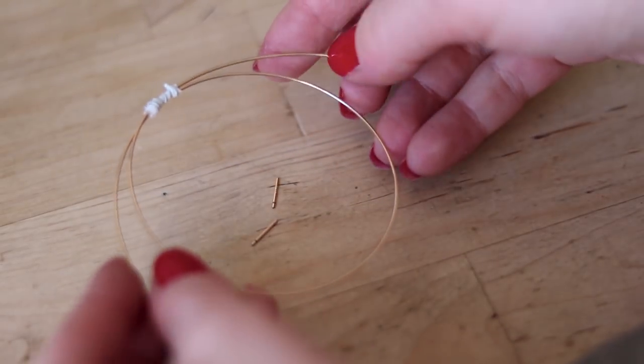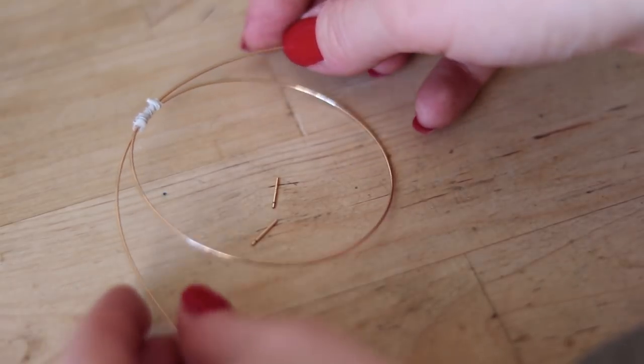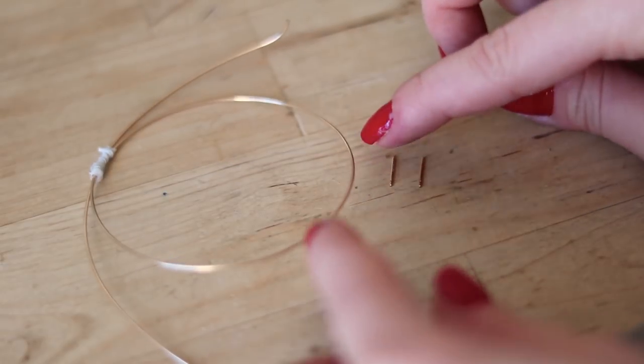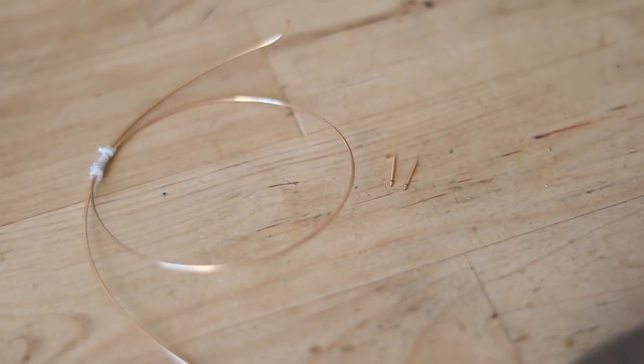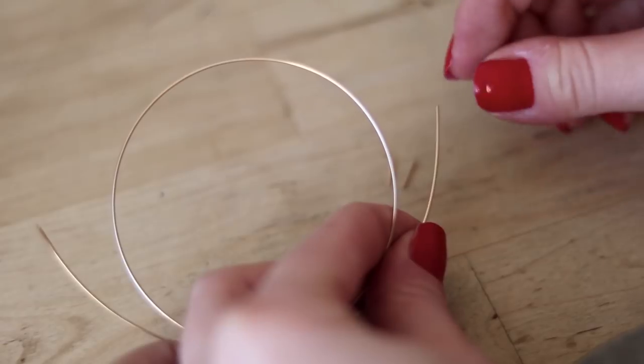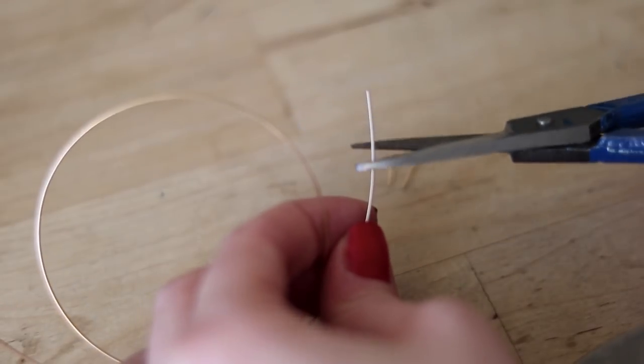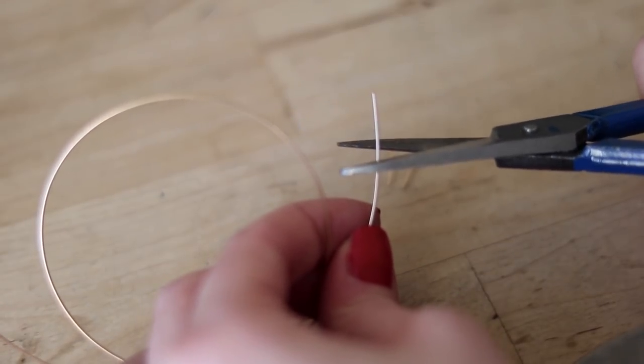Now it's time to make earposts. You can make them with gold-filled wire or use ready-made ones if you are short on time. Making earposts is very easy. Simply straighten the wire and cut to size, then file and polish to make the edges smooth.